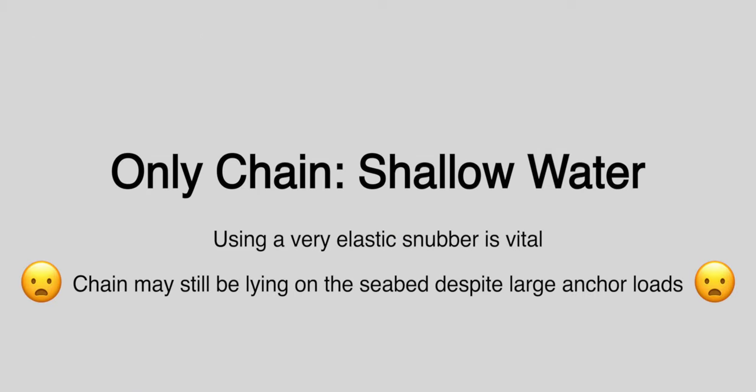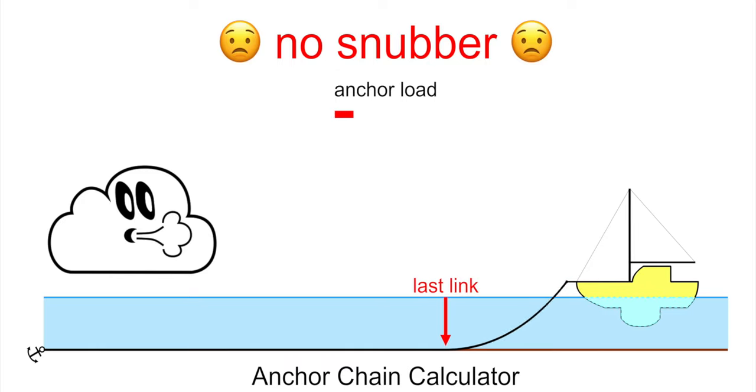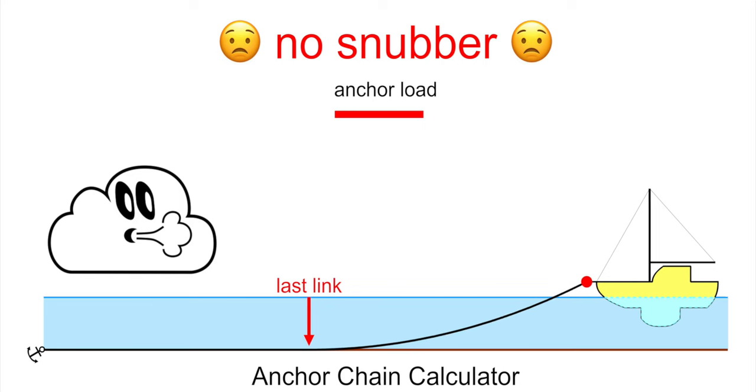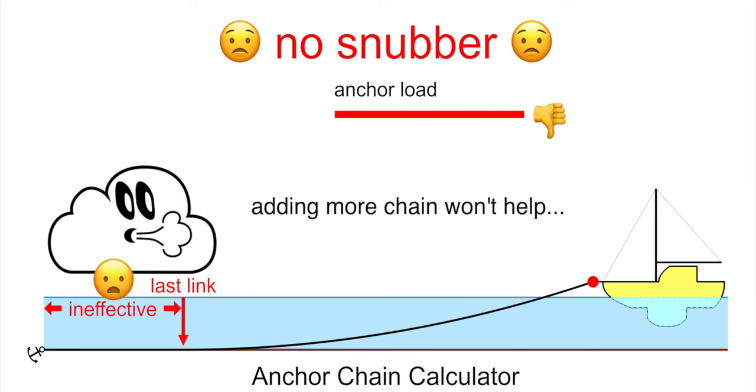Let us first consider the case where we anchor in shallow water, in very shallow water, and only chain is deployed but no snubber or bridle. The anchor load is very high and still there is a good part of the chain lying unused on the seabed.